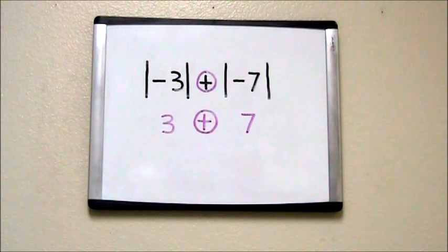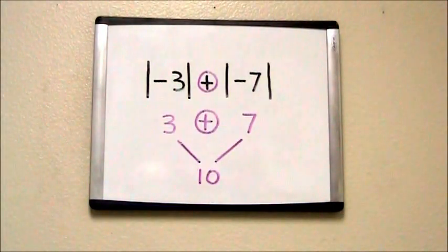We take our plus sign and move it down, it's our operator, and all we have to do now is add 3 and 7 together to get our answer. So the final answer is 10.